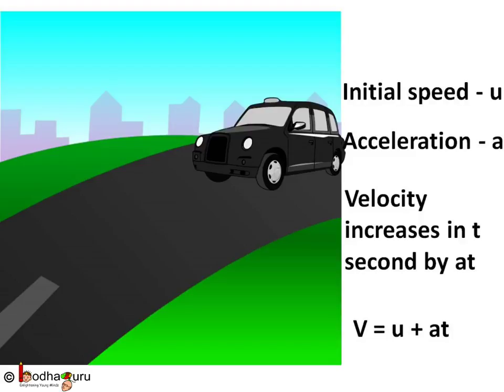Let's take another example. Say the initial velocity of a car which was already in motion was u. This car is now on a highway. The driver presses the accelerator of the car and the car accelerates uniformly.